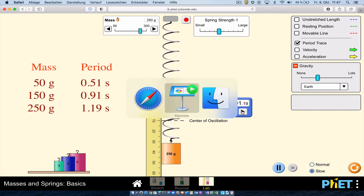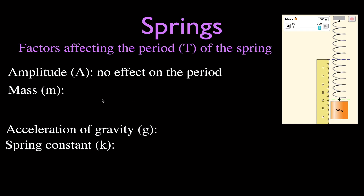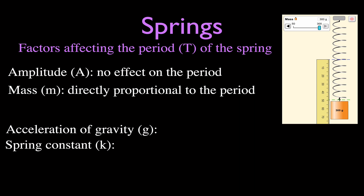Going back to the presentation: when we increase the mass, the period also increases — they are directly proportional. If you increase the mass, the period goes up; if you decrease the mass, the period decreases.